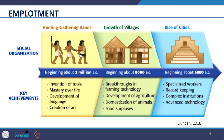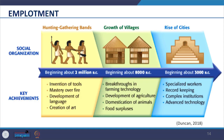As we see today, in the beginning we evolved as hunting-gatherer bands around 2 million BC, with the invention of tools, mastery over fire, development of language and creation of art. As illustrated, we led a nomadic life and moved from place to place for hunting and gathering. We started living a settled life around 8000 BC with the breakthrough in farming technology — we learned how to grow our own food rather than gathering it.